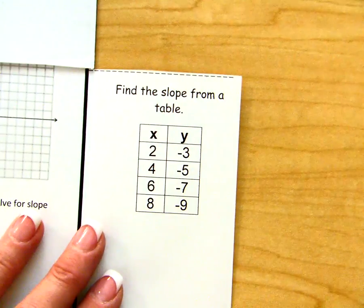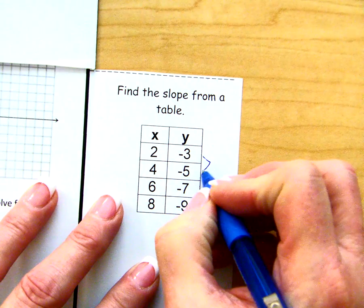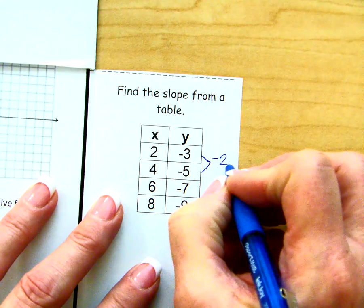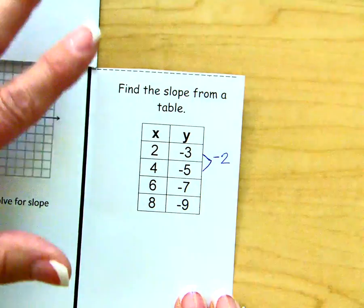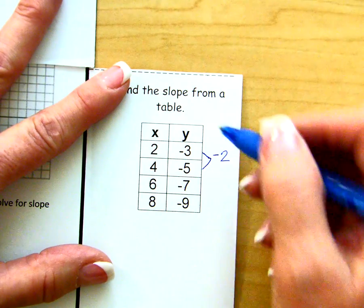So looking at our example here, our change in y to go from negative 3 to negative 5, this change is a negative 2 change because negative 5 is getting more negative than negative 3 or it's smaller, so we're subtracting.